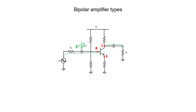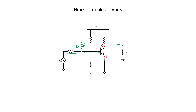Our signal then shows up at the collector of the transistor and finds its way to the load. In a future video, I'll show how to calculate exactly what that AC signal is. What I'm getting at here is that the base and the collector are involved in the signal path, but the emitter is not. The emitter is just connected to ground through a resistor — it's not connected to either the source or the load. It's separate from both of them, so we can call it common. This particular circuit type is called a common emitter amplifier.